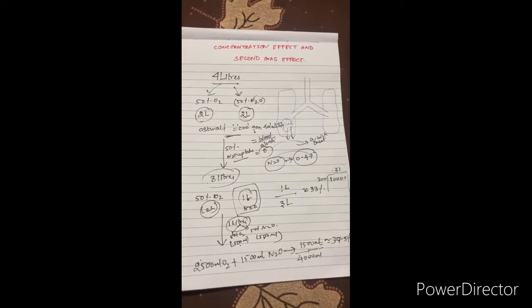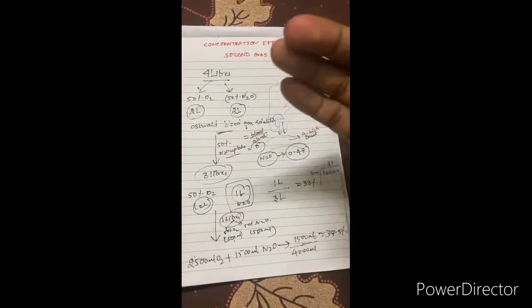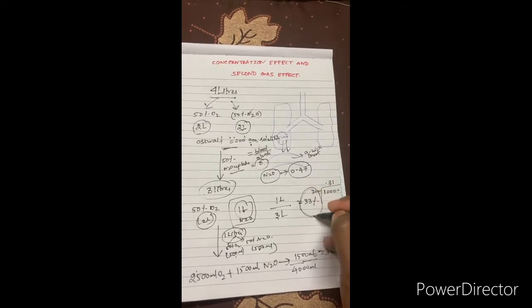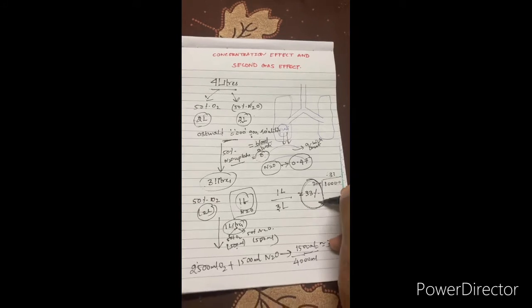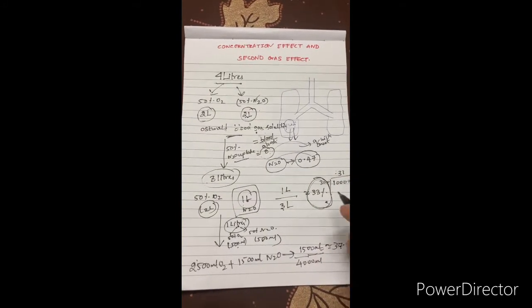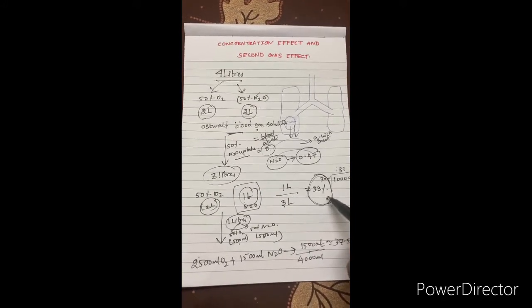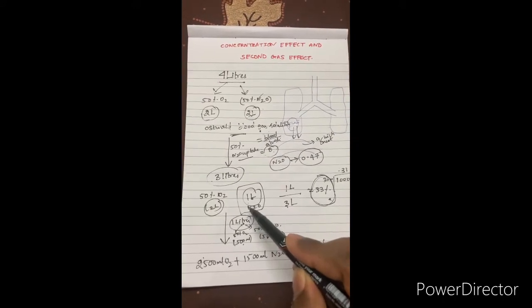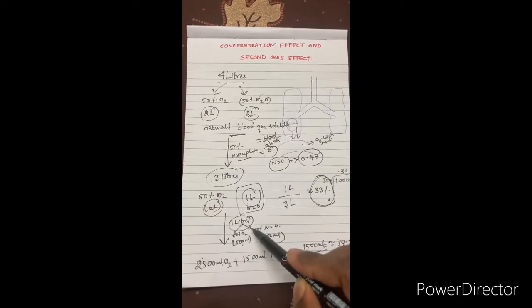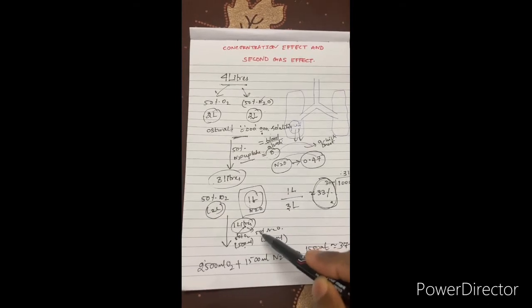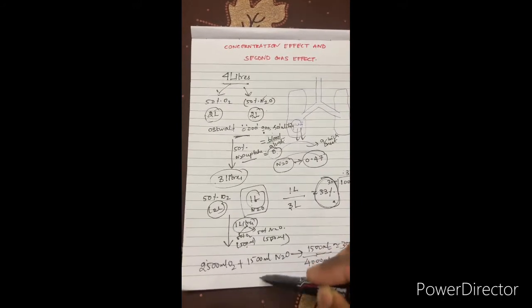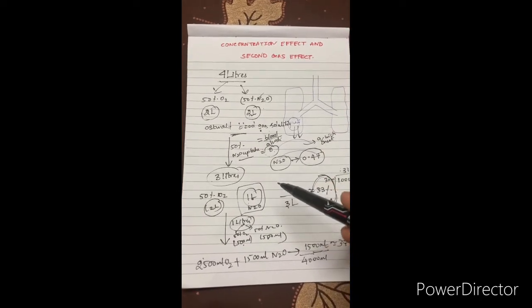This is known as the concentration effect and augmented gas flow. Before uptake, nitrous was at 50 percent; after 50 percent was taken up, the remaining concentration in three liters concentrated to 33 percent — this is the concentrating effect, the first part. The one-liter deficit in the alveoli is then compensated by intake of one liter — this is augmented gas inflow or ventilation drive. These are the two parts of the concentration effect: concentrating effect and augmented gas inflow to replace the lost volume.